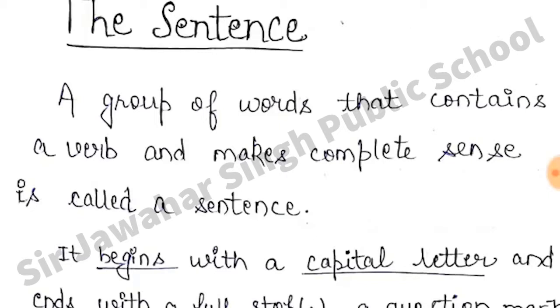The first thing that happens is the alphabet. You have 26 alphabets in the English language. Then you have to frame sentences.